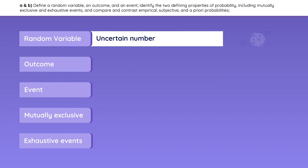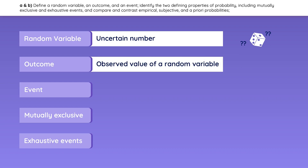If you roll a die, the number that it will land on is a random variable because you don't know what number it will be. An outcome is the actual observed value — if you end up rolling a 2, that was the outcome.